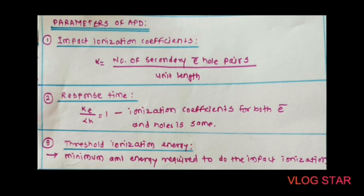The second parameter is response time — the total time period taken by a photodiode to generate photocurrents. In the APD, the gain from impact ionization is very large, so the bandwidth is reduced because a definite time is required for electrons and holes to complete the impact ionization process. If α_e / α_h = 1, both electrons and holes perform impact ionization, so the time requirement is more and bandwidth (which is the reciprocal of time period) is reduced. But if α_e / α_h tends to infinity, the time period is minimized.